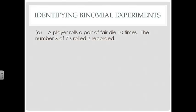Are the outcomes mutually exclusive? Is there a defined difference between success and failure? Yes — if I get a seven, that's success; if I don't, that's failure, and they can't both happen at the same time. The probability of success is the same for each trial. So this one is a binomial experiment.